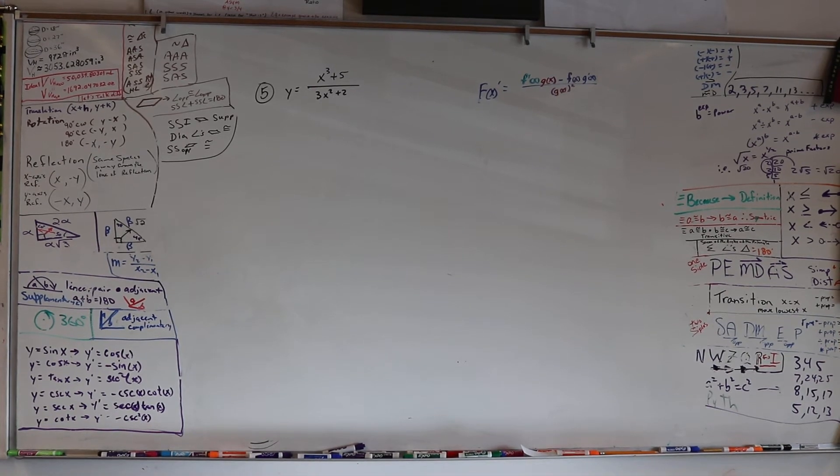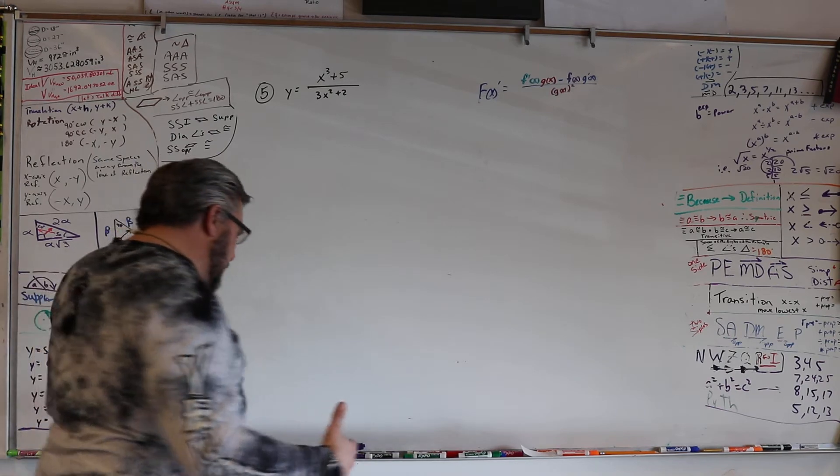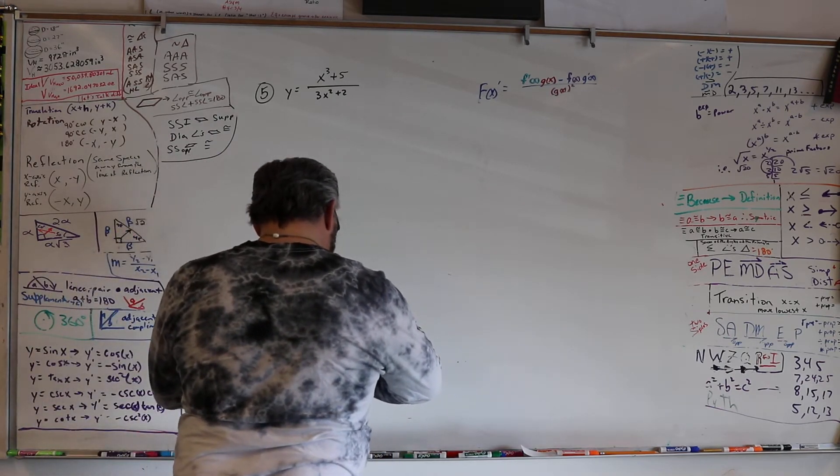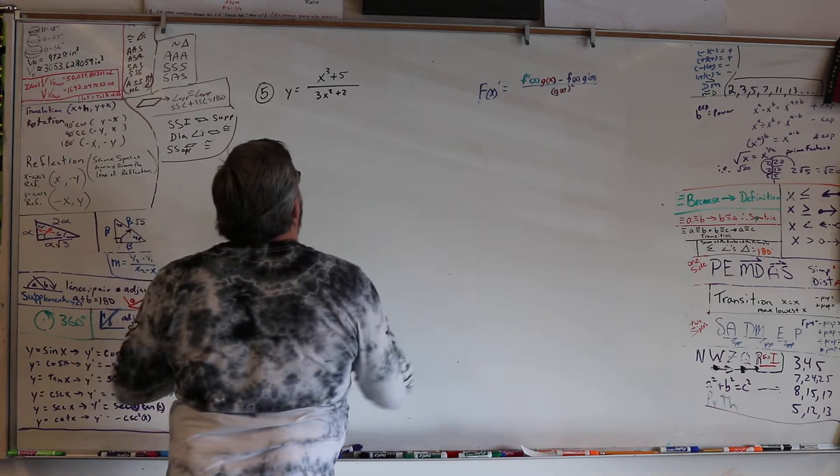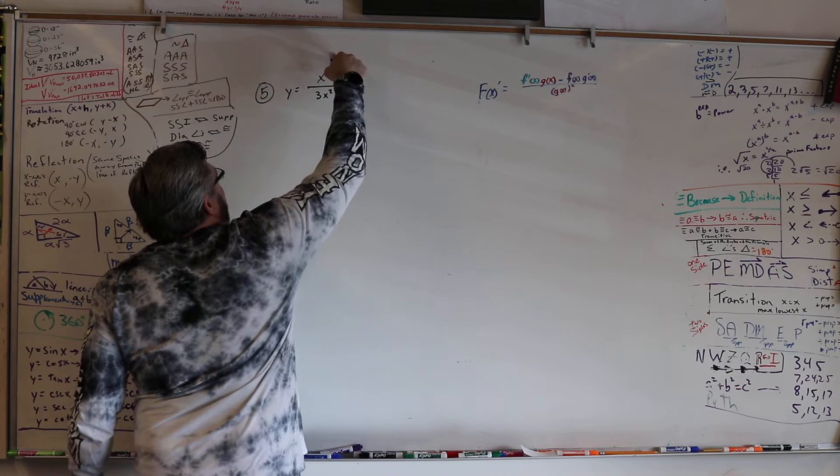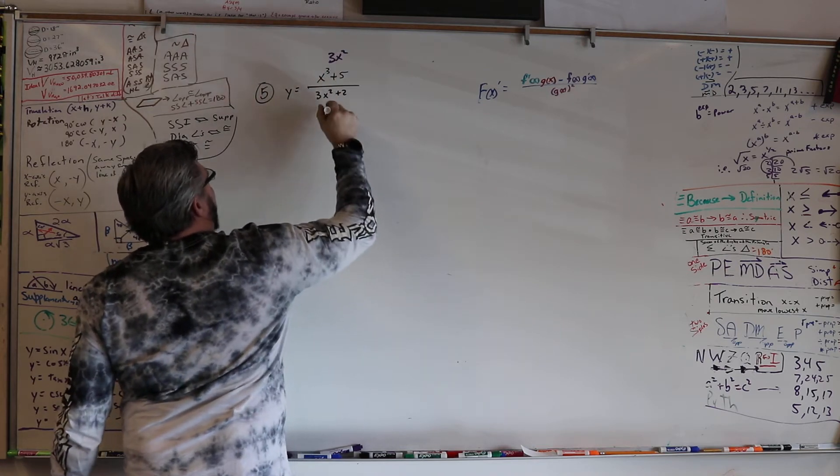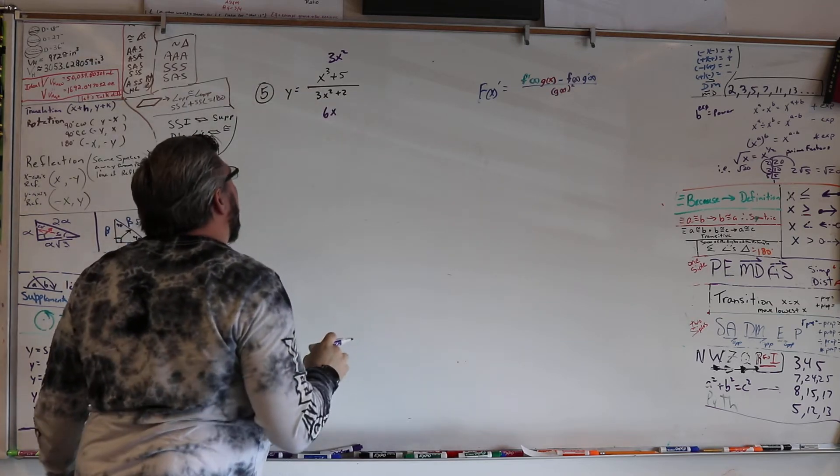Here we go. Number five. Step by step. Let's first look at this derivative, and that's 3x squared. Let's look at this derivative, and that's 6x.